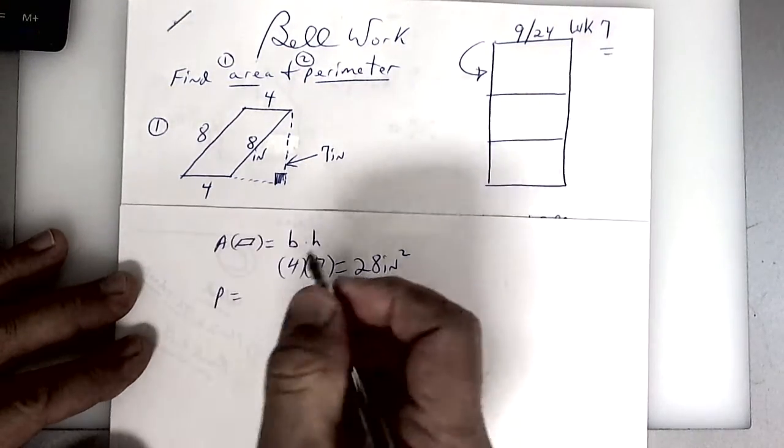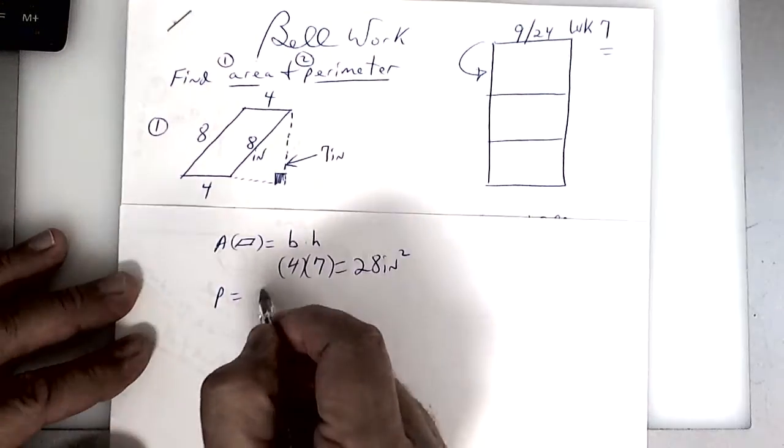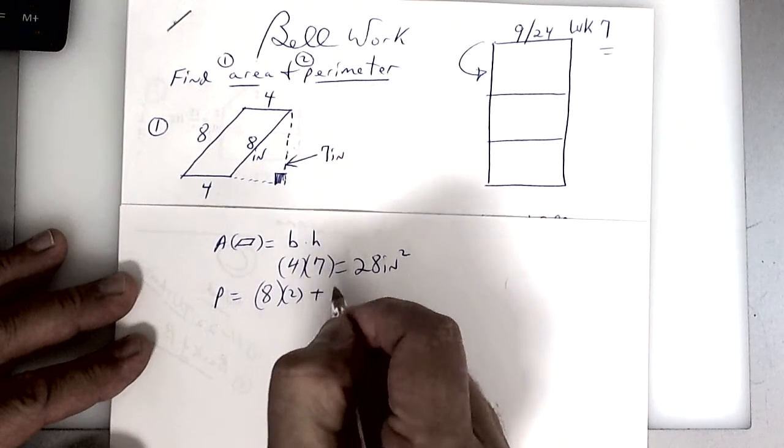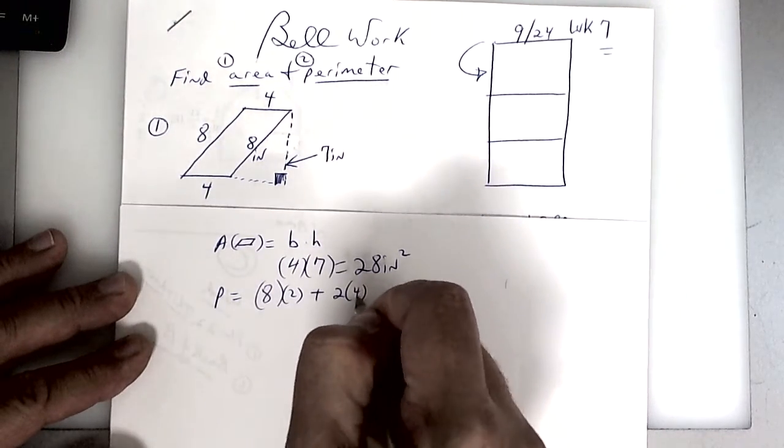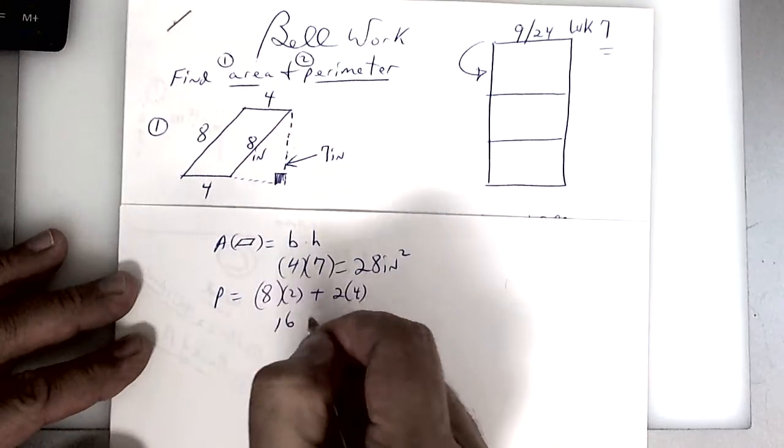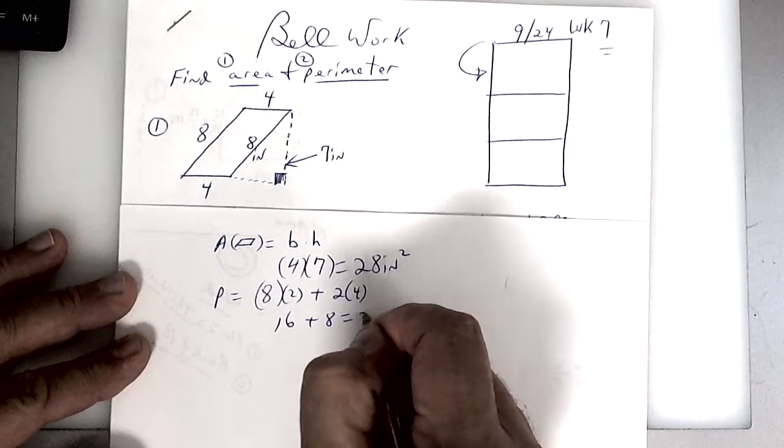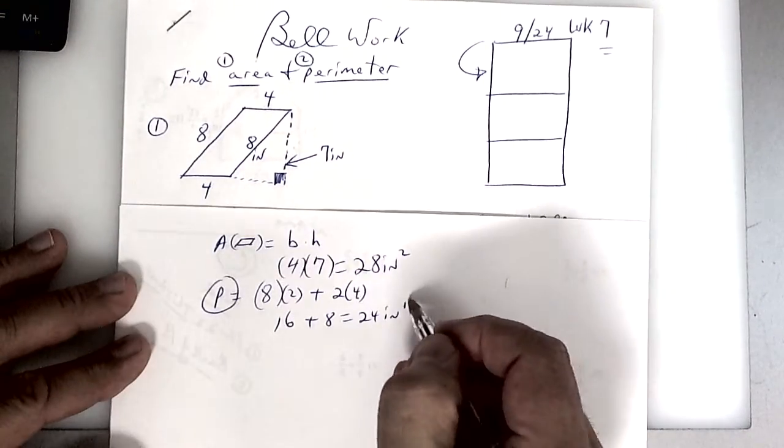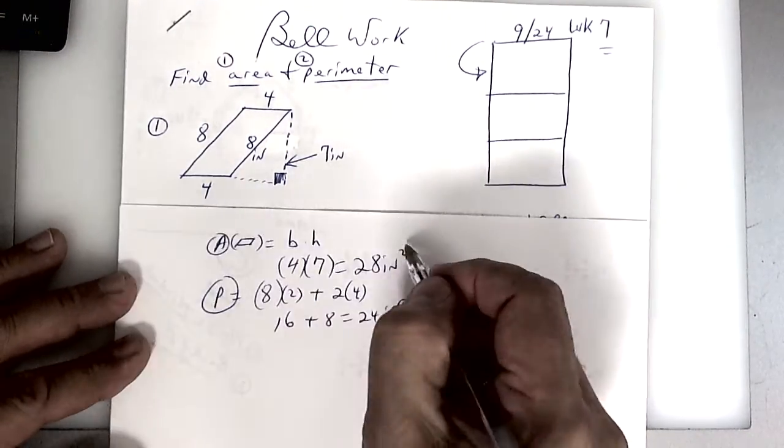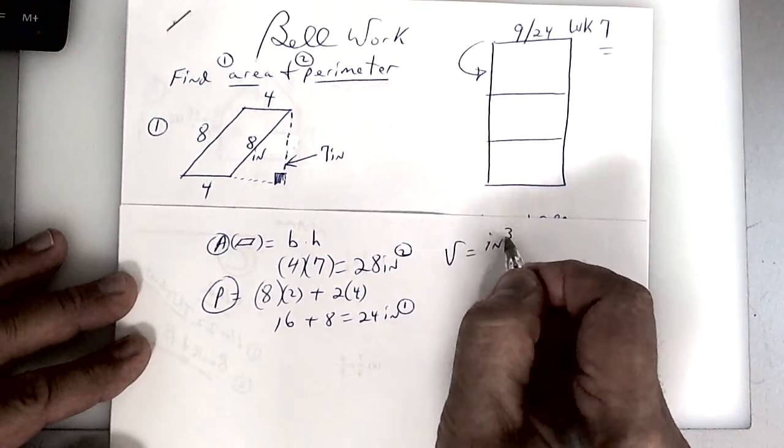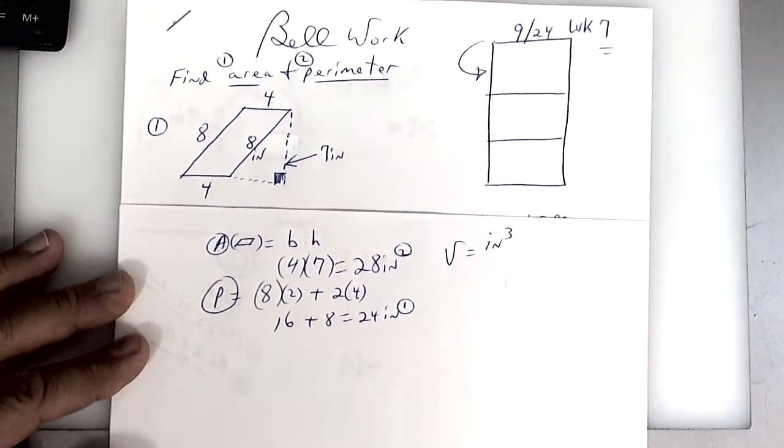So it's four times seven is 28 square inches. To find perimeter you add up eight plus eight or eight times two because you have two of them, and then two times four because you have two of the fours. So this is 16 plus 8 and that should be 24 inches. Remember perimeter is one dimension, area is two, and volume is three dimensions.